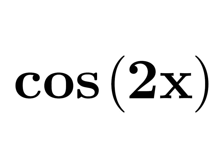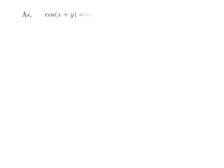In this video, we are going to derive the identity of cosine of 2x. As per the identity for cosine of x plus y, we know cosine of x plus y is equal to cosine of x into cosine of y minus sine of x into sine of y.